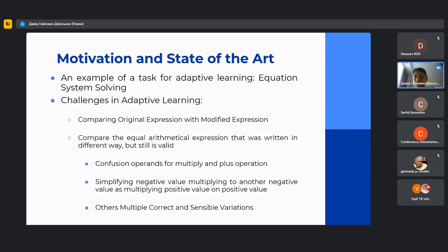In this research we investigate the problem of comparing original expressions with modified expressions that were entered by students. It's needed in many cases, for example in equation solving systems. The challenges in expression comparison include modifications by students that make it impossible to compare the expression as a string, but these modifications are completely legal and don't make the expression wrong, such as confusion of operands for multiply and plus operations, simplifying negative value multiplied by another negative value as multiplying positive value on positive value, etc.